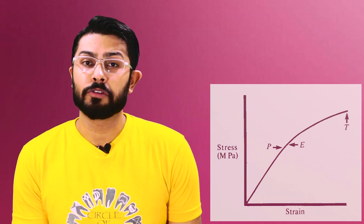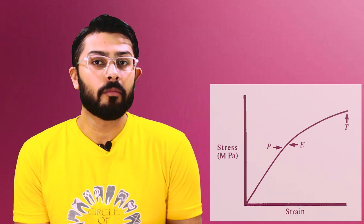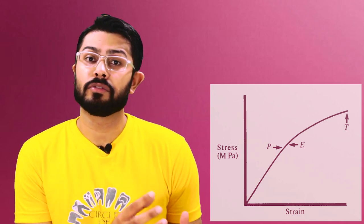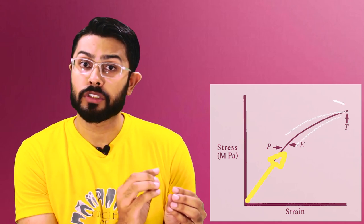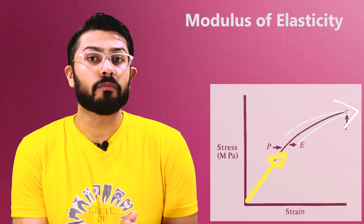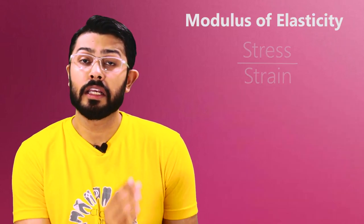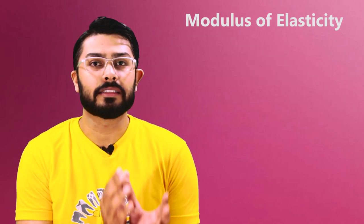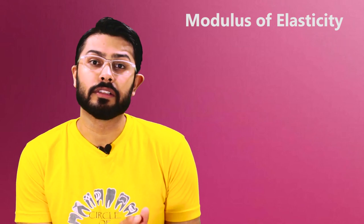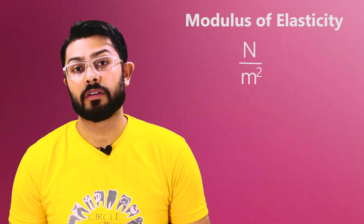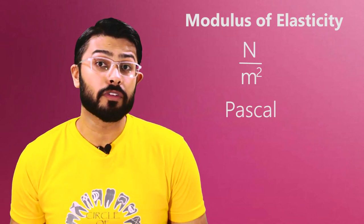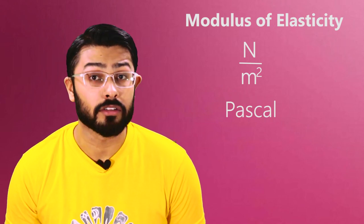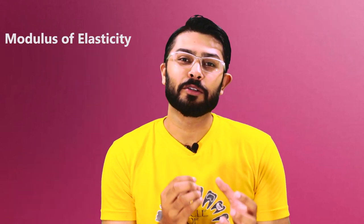I'm assuming you would know about the proportional limit, point E, point T, and the details related to these, as we went through this extensively in the last video. I want you to notice that there is a slope after the straight line portion in the stress-strain graph. This slope gives us a measure of modulus of elasticity. Modulus of elasticity is given as stress over strain, and it has the unit of stress — Newton per meter square, or Pascal.